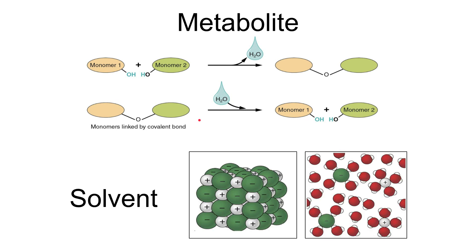Finally we have the solvent properties of water. So again because of the polar nature of water with the partial positive and partial negative charges, it means the water is attracted to substances dissolved within it. So in this example here we've got some kind of ionic compound which is made up of ionically charged negative and positive particles, and you can see here that the hydrogen side of the water molecules are attracted to this negatively charged ion.